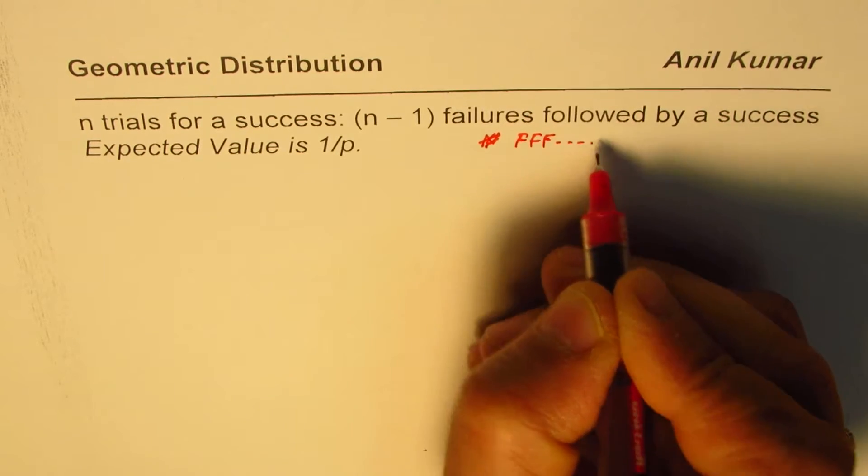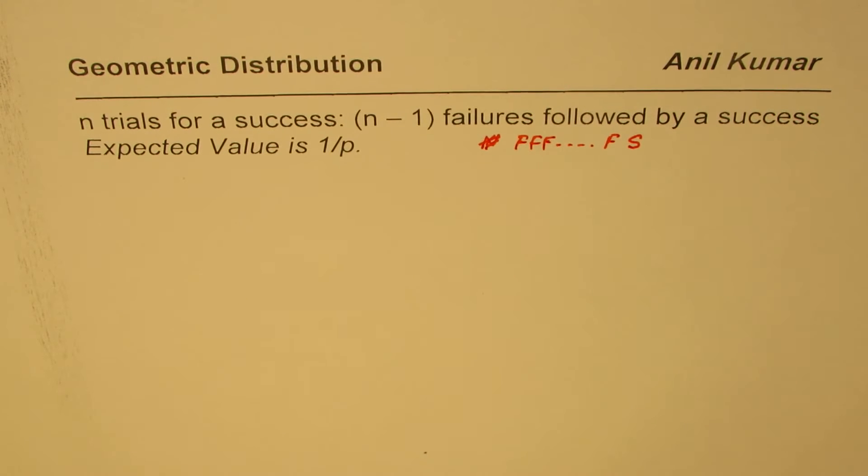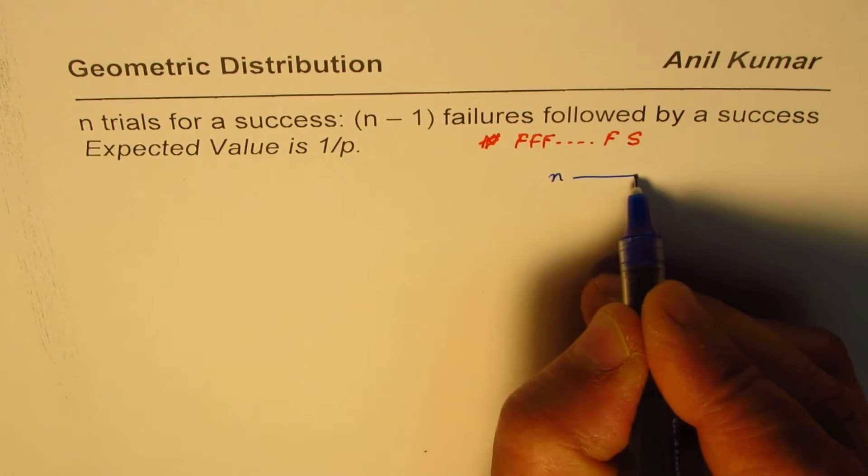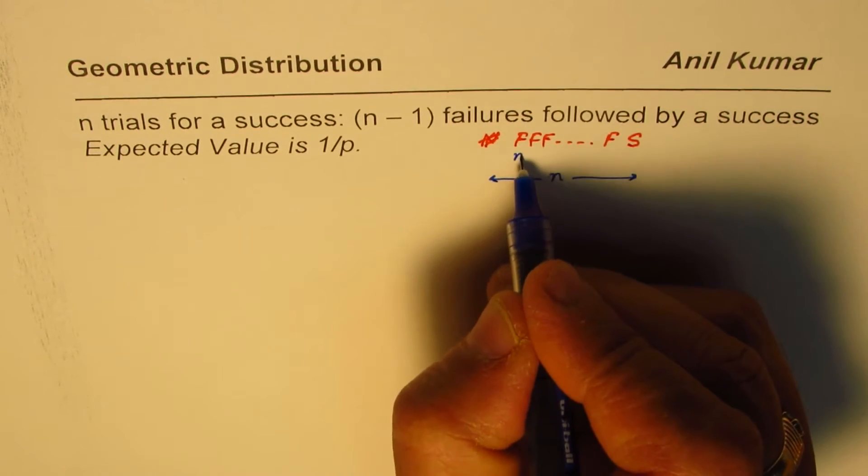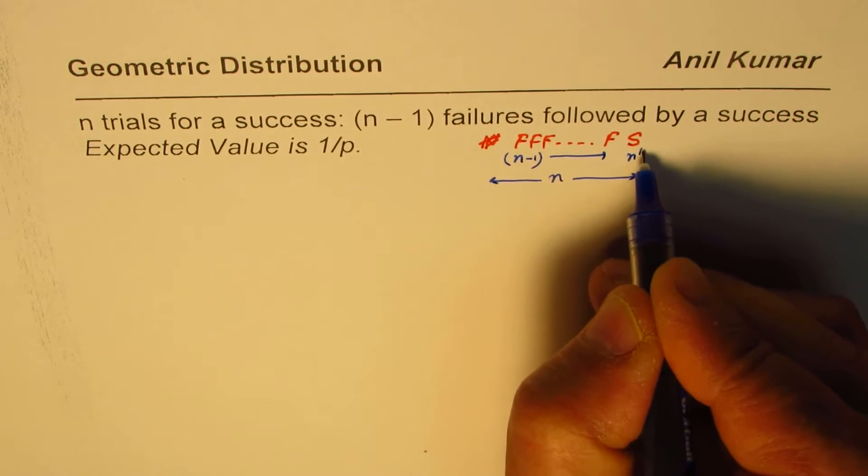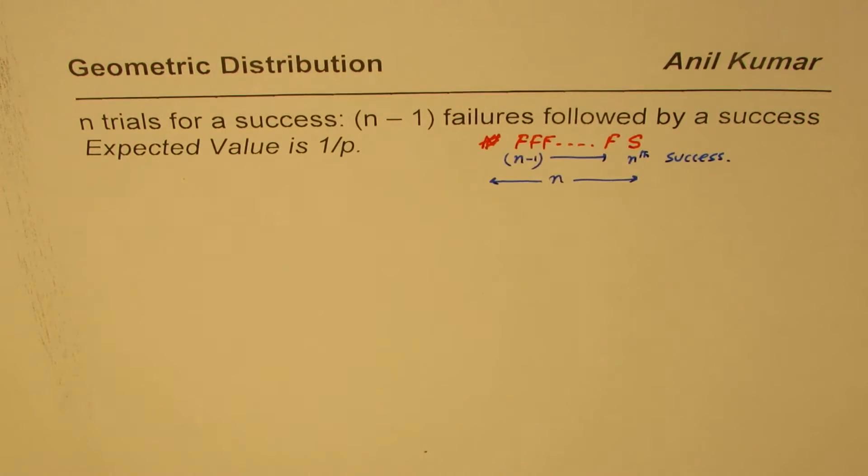failures for n minus 1 terms followed by a success. If we have total number of trials as n, out of them n minus 1 are failures and the nth one is success. All these trials we will consider to be Bernoulli trials, where we have only two outcomes which are success or failure, probability of success remaining same.